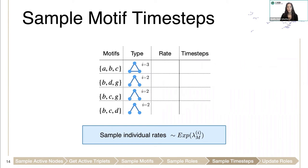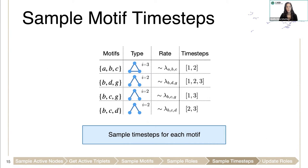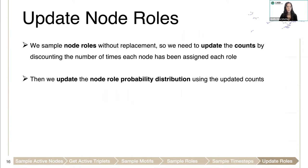Then we'll need to sample when these motifs will appear. For each motif instance, we'll sample an inter-arrival rate that depends on the rates for that type. From those rates, we sample each instance's inter-arrival rate, and then using those rates, we sample the time steps at issue one.